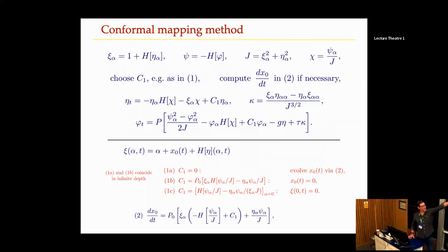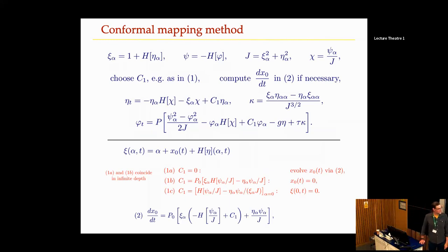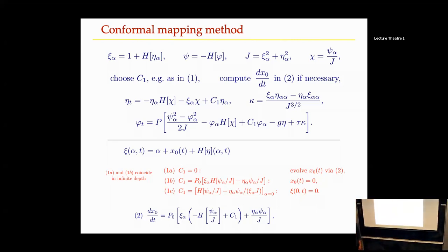This is the simplest set of equations for the water wave in terms of computational complexity — time stepping is largely just FFTs. For the constant C and DX0DT: in infinite depth, set C to zero and X-zero stays zero. In finite depth, define C in a certain way to have X-zero be zero. Another convenient choice is requiring xi of zero to remain zero, keeping the initial alpha-equals-zero point corresponding to X equals zero — any of those choices works and avoids solving the ODE.